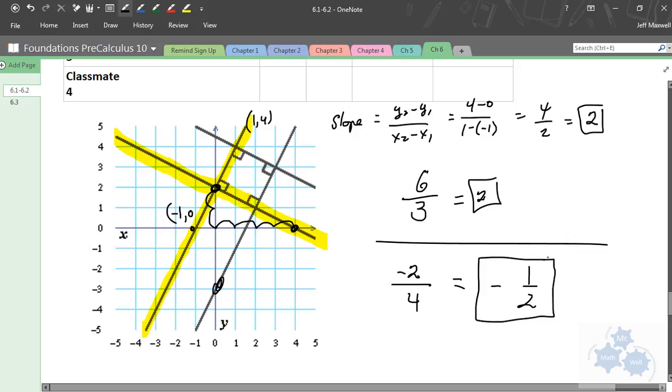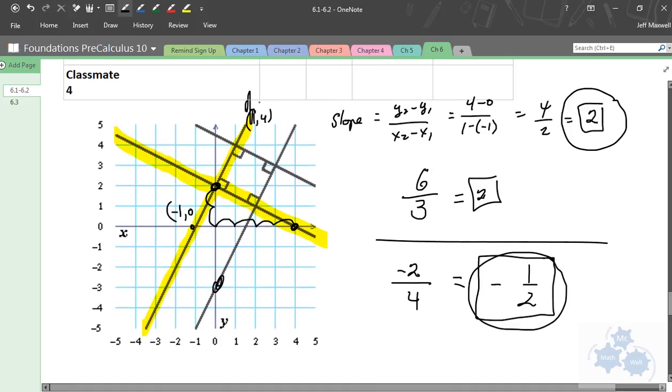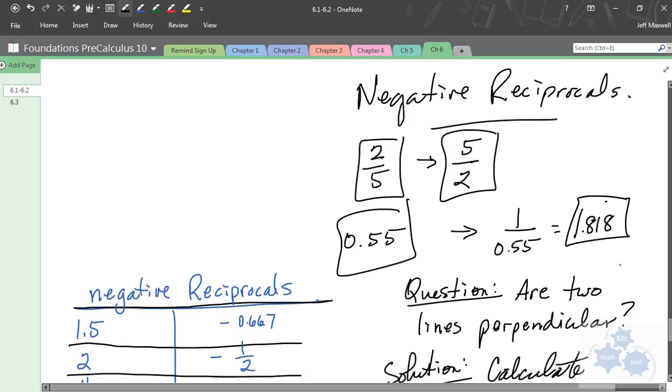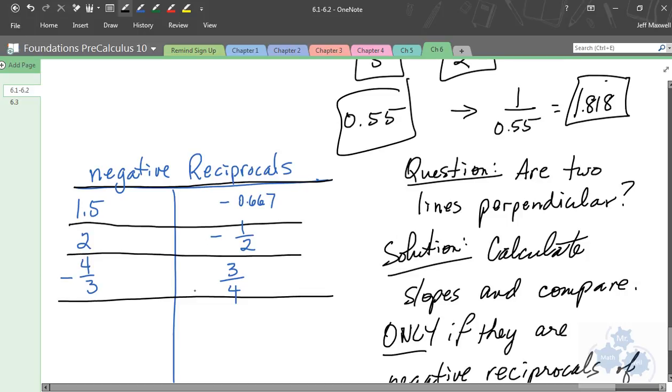So what we came up with yesterday is that perpendicular lines, so lines that form a 90 degree, their slopes are related in that 1 is the negative reciprocal of the other one. So if 1 is 2, so this is a slope of 2, slope of 2 right here, a perpendicular line would be the opposite sign, so negative, and then 1 over 2. And that's the negative reciprocal. So here's, again, a little bit of what we did yesterday, some examples of negative reciprocals right here.